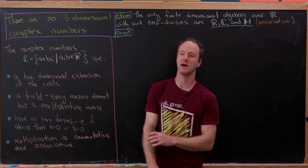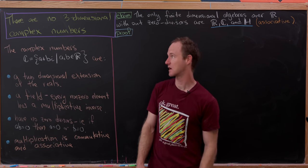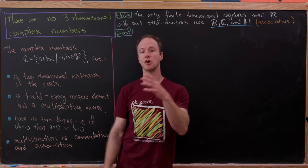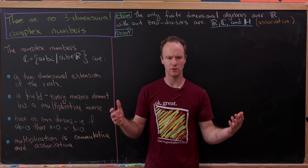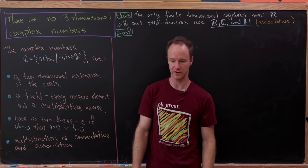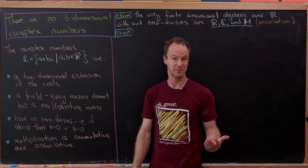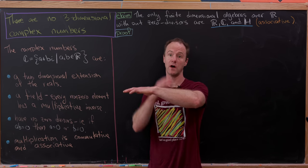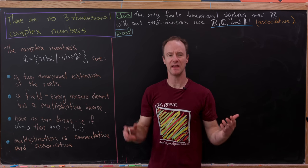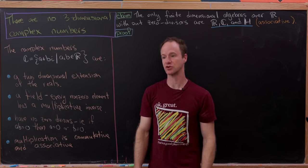Today we're going to look at a very popular mathematical question: is there some sort of three-dimensional analog to the complex numbers? If you look at the complex numbers over the real numbers, it is a two-dimensional object built out of the real numbers. You have a real axis and an imaginary axis, spanned by the number 1 and the imaginary unit i.